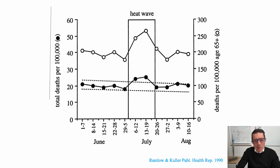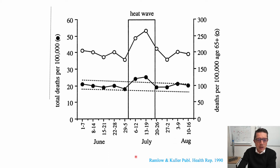We have spoken in the past about the issues that older adults face around their ability to dissipate heat and their sensitivity to heat stroke and complications from heat injuries. These data from the late 80s, published in the 90s, show the number of deaths per 100,000 in older adults and how they spike during a heat wave. This increase in the entire population is primarily driven by deaths in older adults, 65 plus.